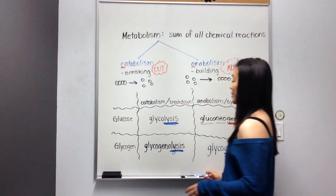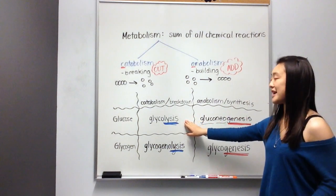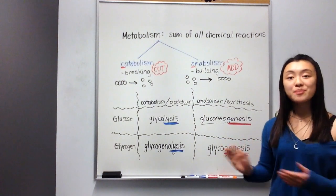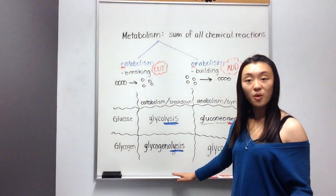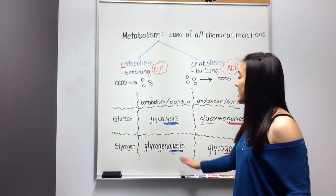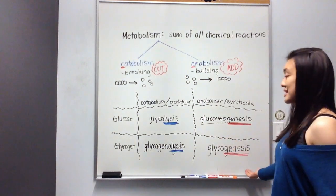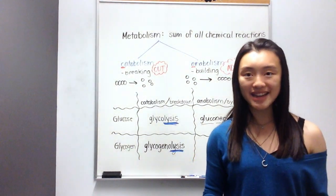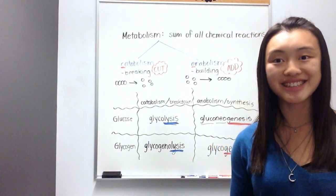So to do a quick summary, glycolysis is breaking glucose into ATP. Gluconeogenesis is turning fats and proteins into glucose. Glycogenolysis, or glycogenolysis, is breaking down glycogen back into glucose. And glycogenesis is the formation of glycogen, which is done only when you have excessive glucose, such as after a large meal or eating a dessert.